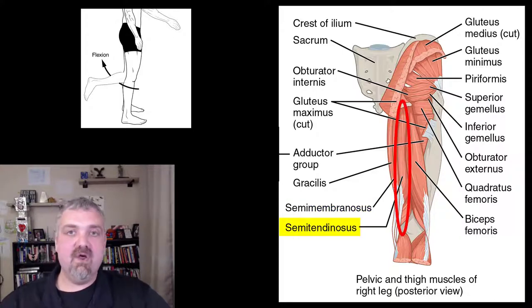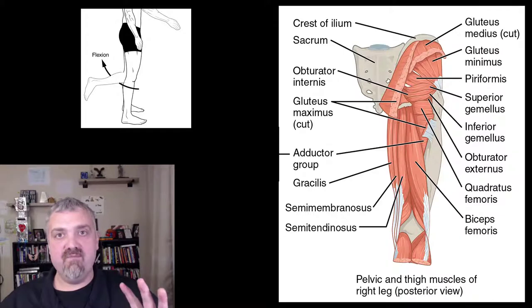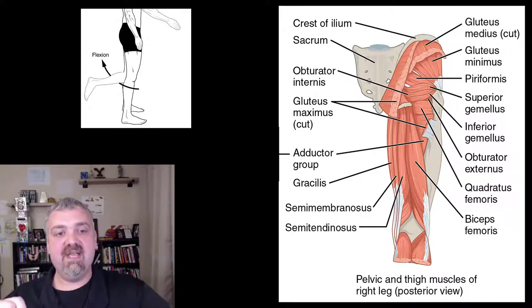And then semitendinosus has the longest tendon, the insertion point distally there under the knee. So the semitendinosus, look for the longest tendon that travels down below the knee. Semimembranosus, if you dissected the body or took off more muscles, you'd see this sheath-like origin there.